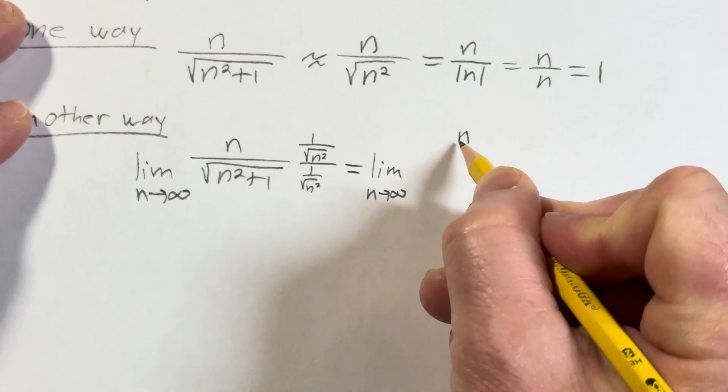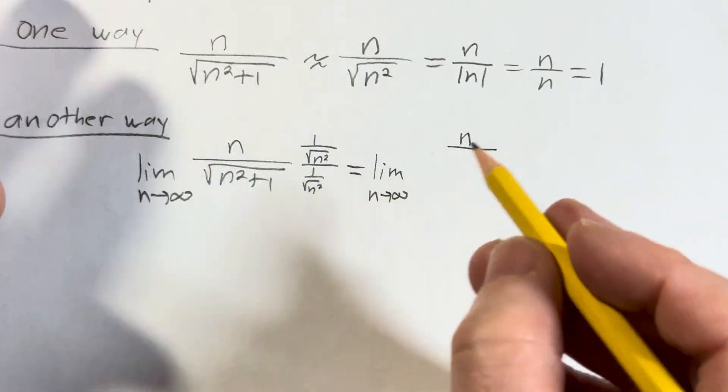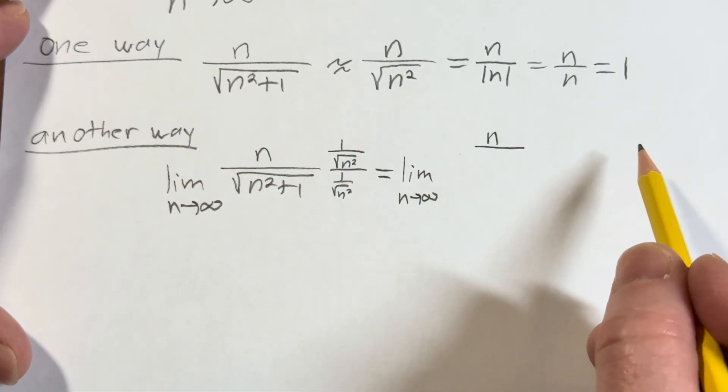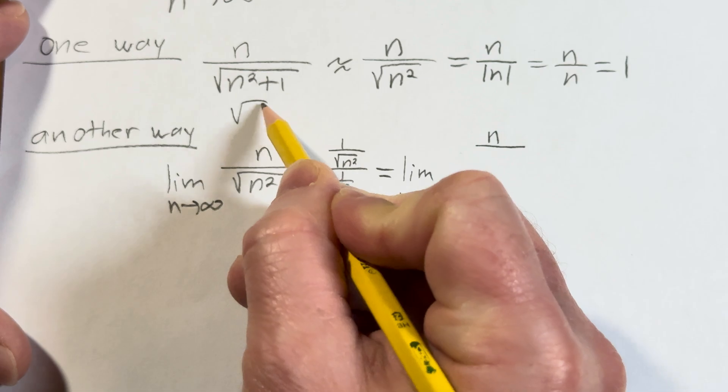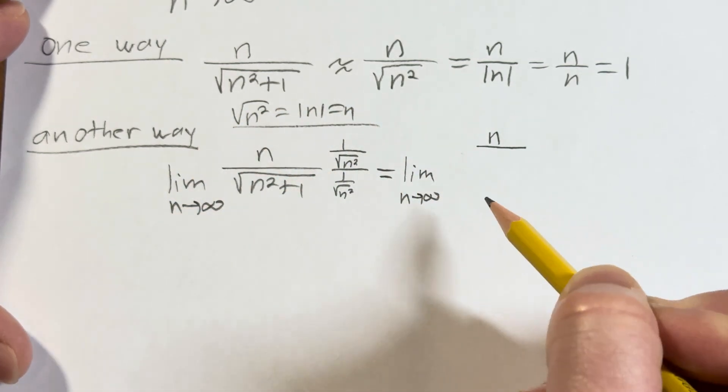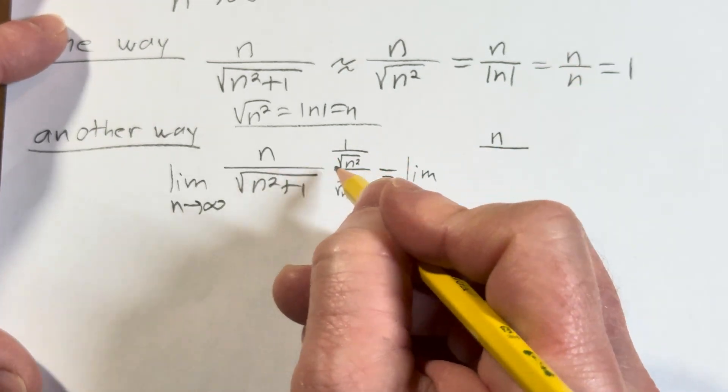So this is going to be n over, actually, we know that in this case, because n is approaching infinity, we know that the square root of n squared is equal to n, right? Because n is big and it's positive, so I can easily put an n here.